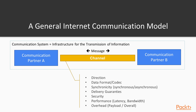What I have here is a picture of a very general internet communication model. Basically, you always have two communication partners — partner A and partner B — connected by a message channel. Via this channel they transmit information in the form of messages. The channel has some typical properties, first of all the direction the message flows: left to right, right to left, or bi-directional.